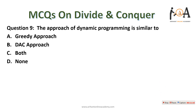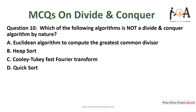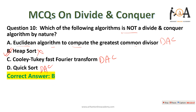The approach of dynamic programming is similar to divide and conquer, but in divide and conquer we solve overlapping sub-problems separately, whereas in dynamic programming we store results and directly use them. The next question: which algorithm is NOT divide and conquer? The Euclidean GCD algorithm is divide and conquer. Cooley-Tukey Fast Fourier Transform is also divide and conquer. Quick sort is divide and conquer. Heap sort is NOT a divide and conquer technique — so option B is the right answer.